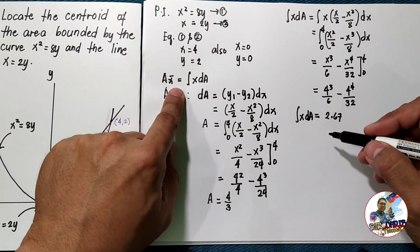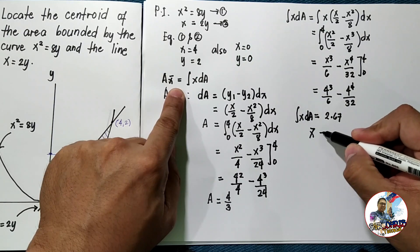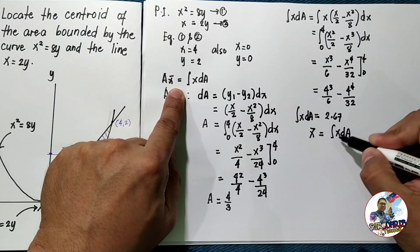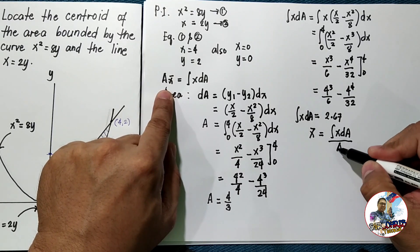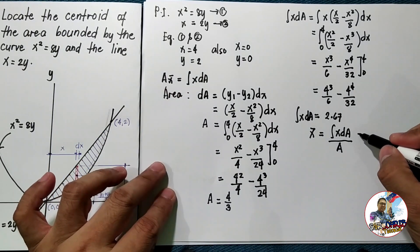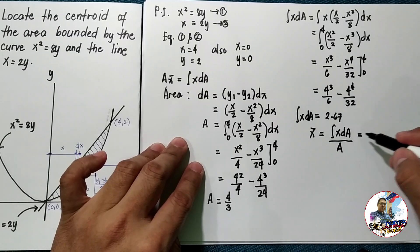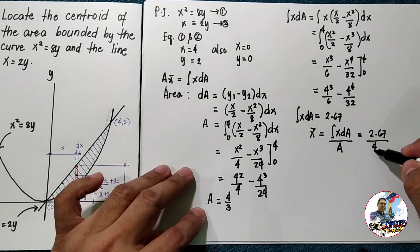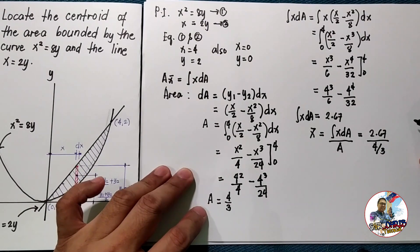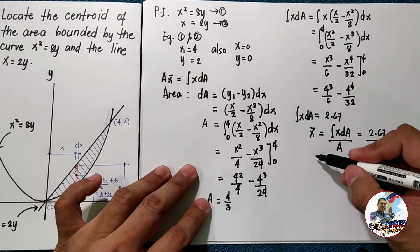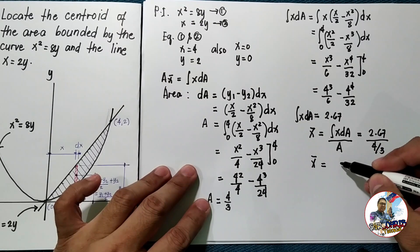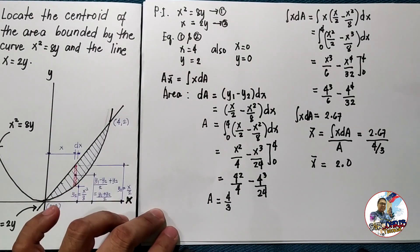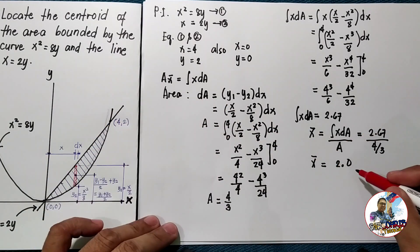From the formula, x̄ = ∫x dA / A = 2.67 / (4/3). Therefore x̄ = 2.